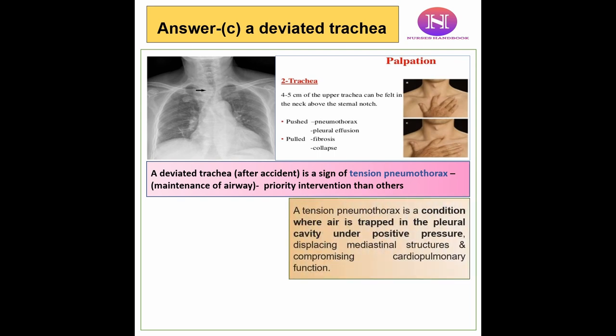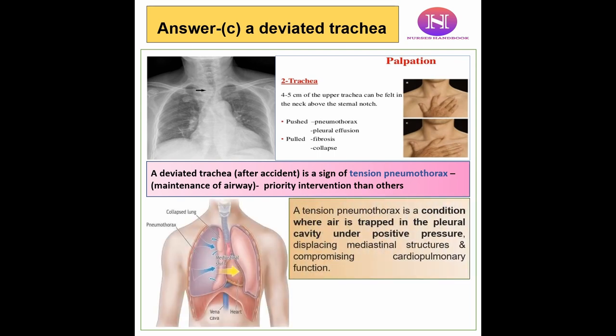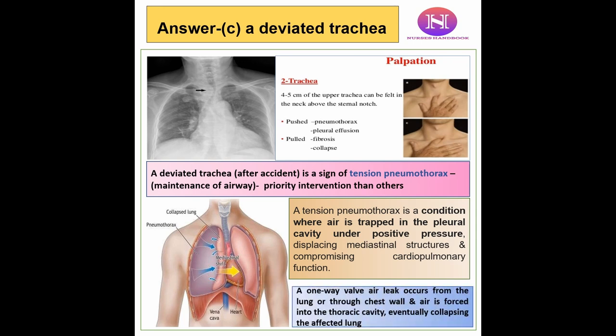Tension pneumothorax is a life-threatening condition where air gets trapped in the pleural cavity under positive pressure, which moves the mediastinal structures and compromises cardiopulmonary function. The air gets trapped either by an air leak from the lung or through the chest wall from outside, as in cases of chest wall injuries, which eventually collapses the lungs.